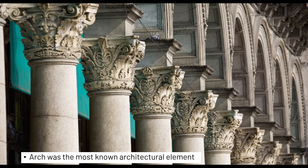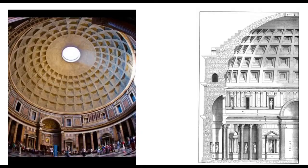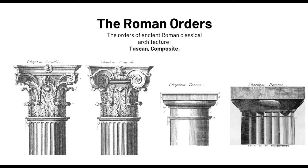If your answer was arches, then congratulations — yes, it was arches. As we all know, from the Greek temple with its simple straight lines, linear edges, and simple beams and columns, the Roman era of architecture evolved to arcades and domes — to the Pantheon. So from simple lines, the Romans discovered arches, which gave us architectural magnificence such as the Pantheon. That's why the arch is the most well-known element during the Roman era.